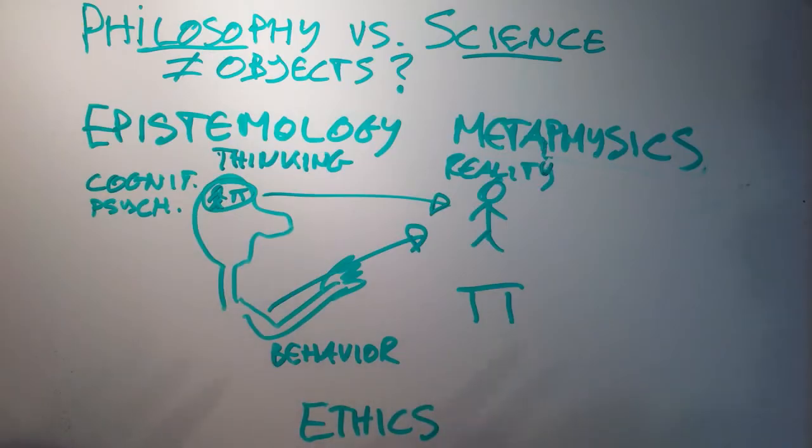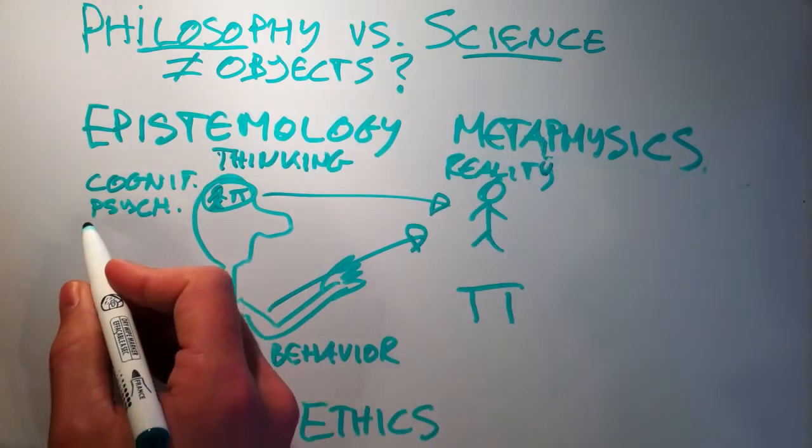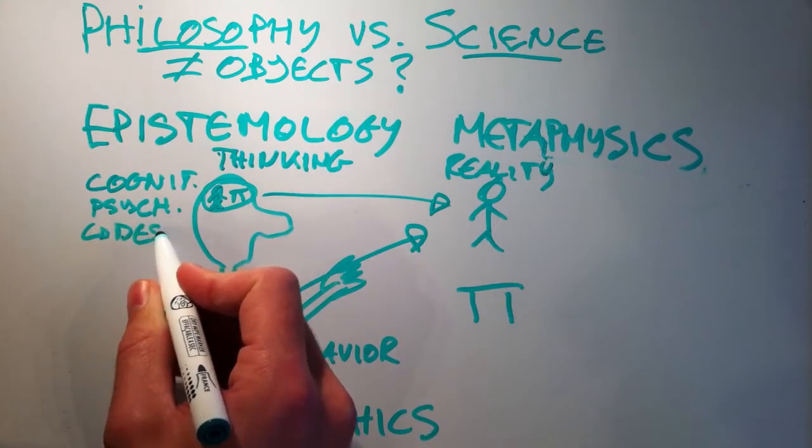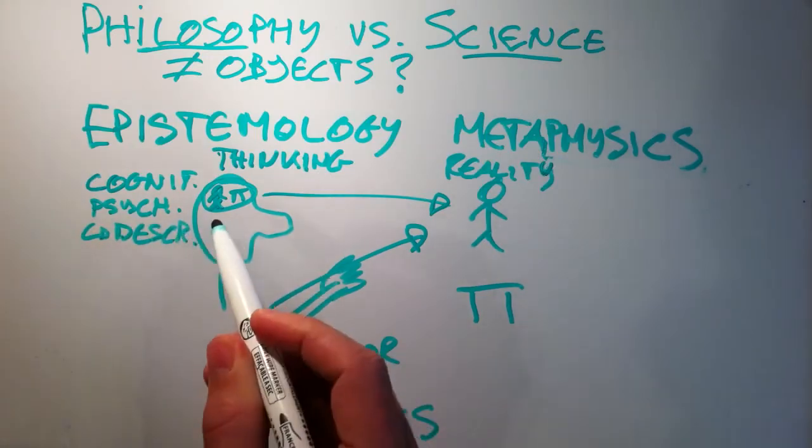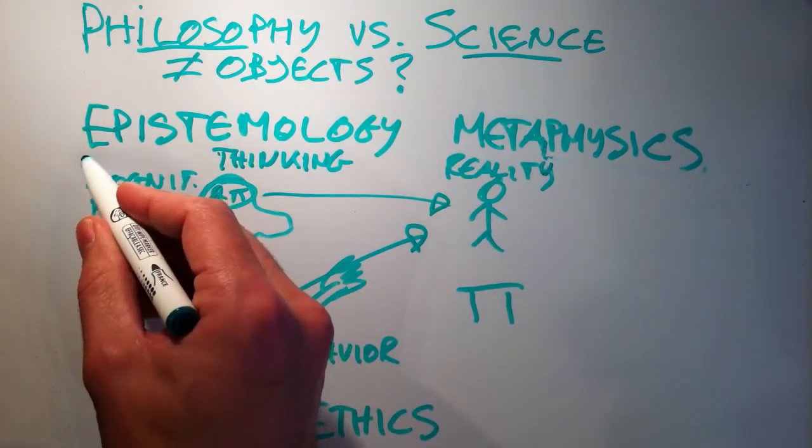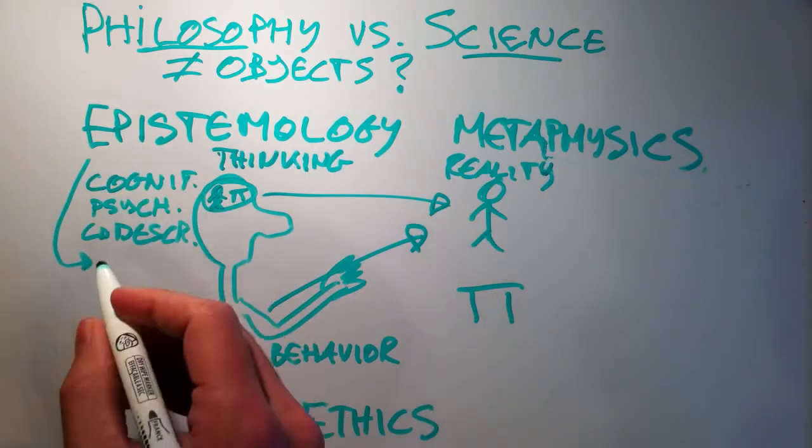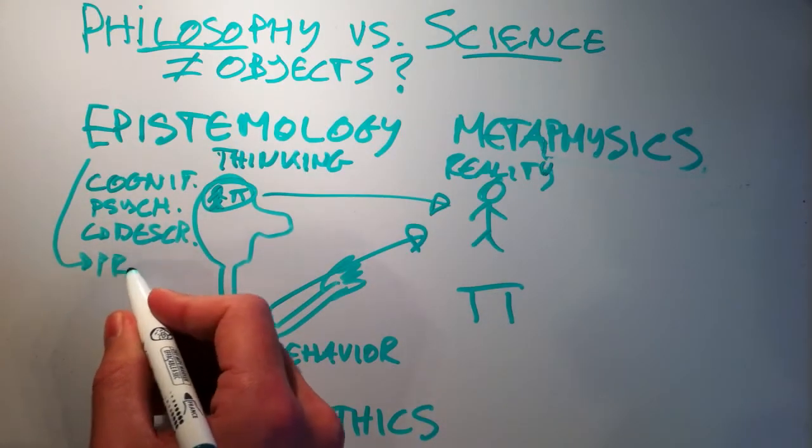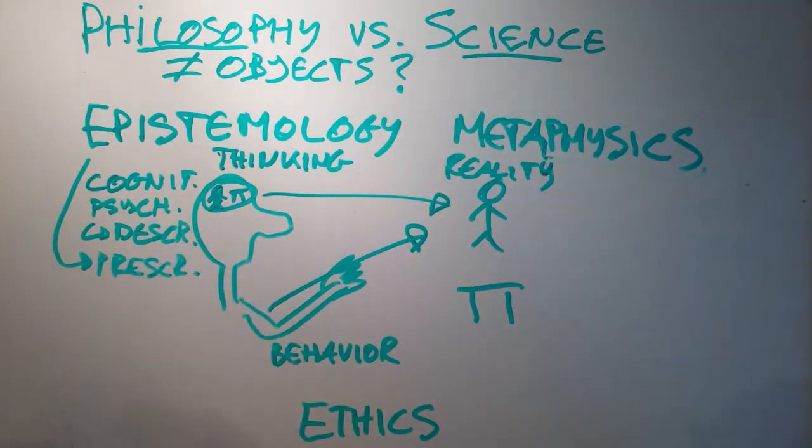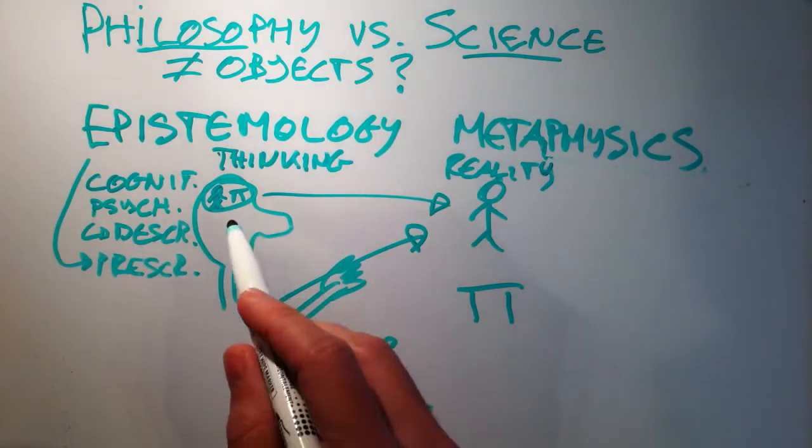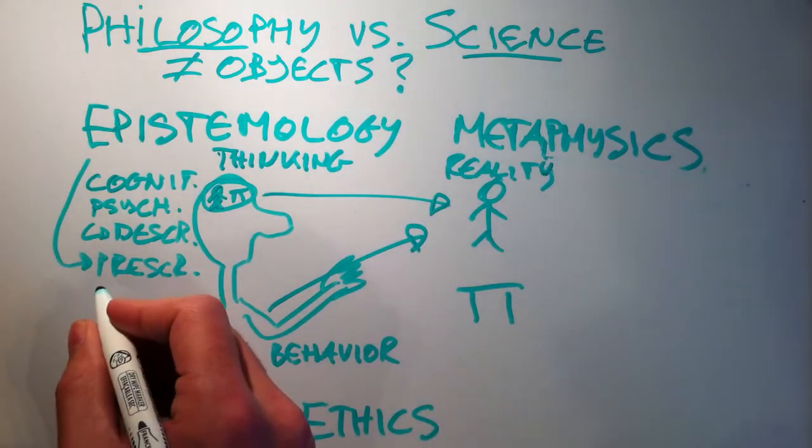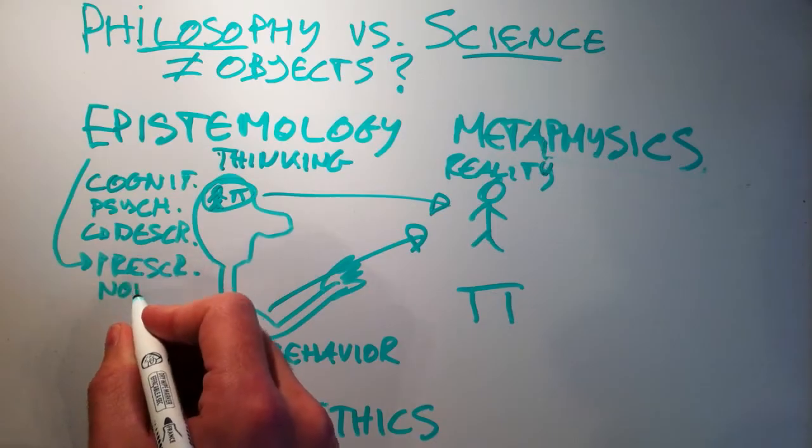However, philosophers will reply that cognitive psychology is a description of how people acquire beliefs about reality. In contrast, epistemology is a prescription. It is prescriptive, a prescription about how people should acquire beliefs about something. It is prescriptive, it is normative.